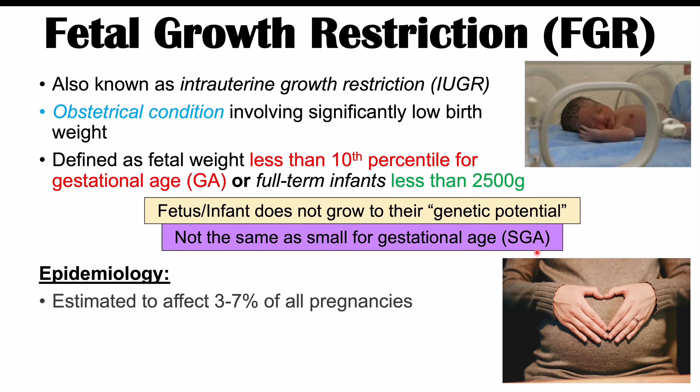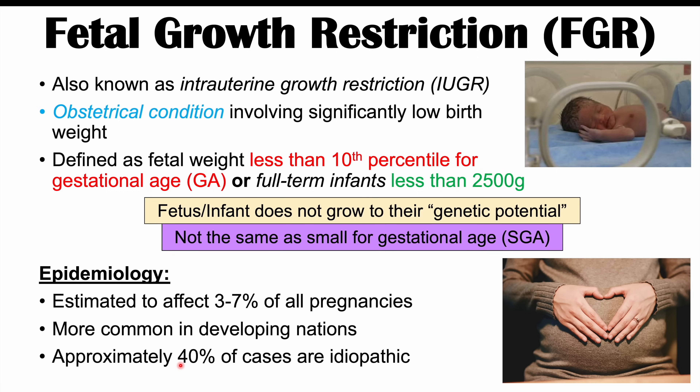Fetal growth restriction is estimated to affect 3 to 7 percent of all pregnancies. It's more common in developing nations, and particularly in certain Asian countries. Approximately 40% of fetal growth restriction cases are idiopathic, meaning the underlying cause is not known or identified.